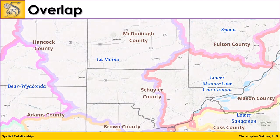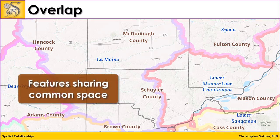Overlap occurs when two features share some common space, but neither is completely contained within the other. For example, a location may be within a county as well as within a watershed. The areas that define each county and watershed may be different, but in some locations they overlap each other.